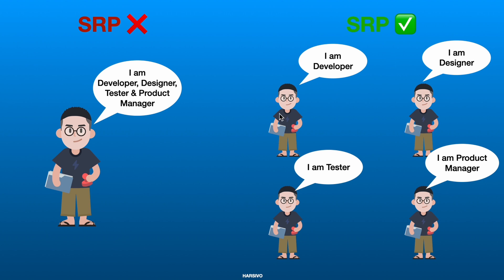To follow the SRP rule, one person should have only one responsibility. One person will be the developer taking care of development, another will be the designer handling design, another will be the tester handling testing, and finally the product manager overseeing the whole product. This way, you have a proper product managed by the product manager but internally delivered by people each responsible for their own single job — this follows the Single Responsibility Principle.